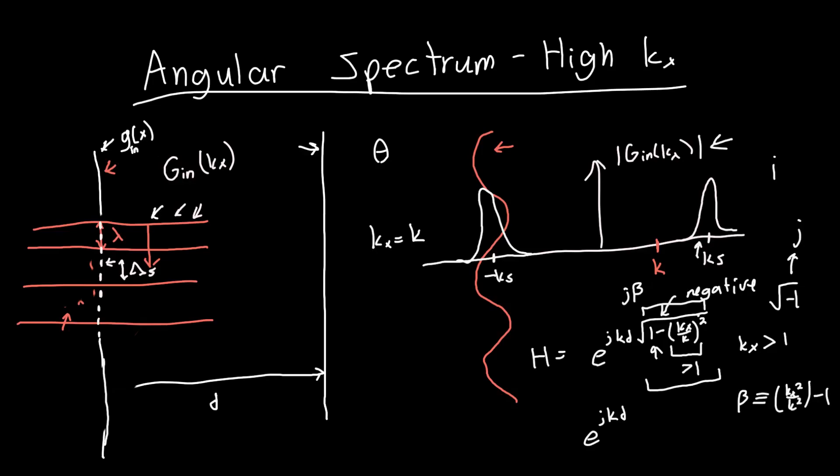So beta is just going to be defined as kx squared over k squared minus 1. So it's a positive real number. And so we've got e to the j, k, d times j beta. And that's just, we multiply j by j. We get e to the minus k, d times beta. So when we propagate by a distance d, we're no longer changing the phase, but we're actually attenuating the plane wave.